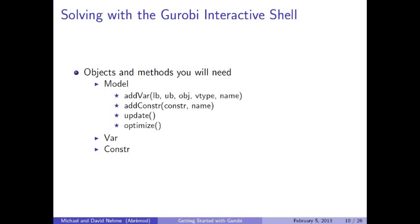Every time you add a variable or constraint to your model, it increases the model's size, which has a cost. Gurobi allows you to add all decision variables at once and all constraints at once, but you must tell Gurobi when you're done adding variables by calling the update method. After calling update, the decision variables are synced with the model, and then you add structural constraints via addConstr. Once all decision variables and structural constraints have been added, you call the optimize method to solve the problem.